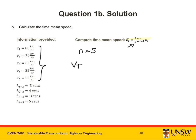Time mean speed is equal to 1 over n multiplied by the sum of the spot speeds. The time mean speed is therefore 63 km per hour.